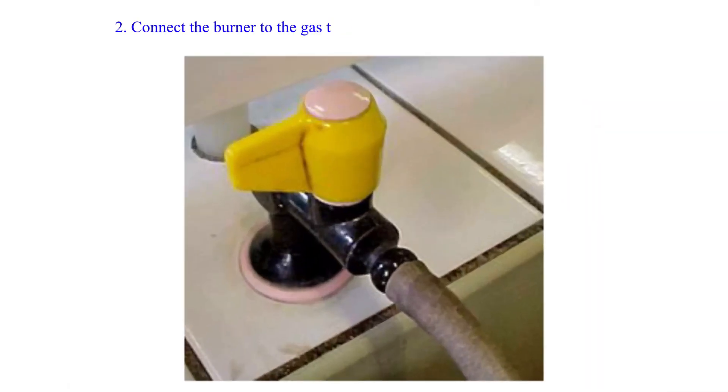2. Connect the burner to the gas tap using rubber tubing. Ensure the rubber tubing has no side leaks.